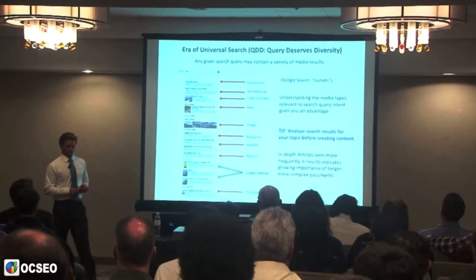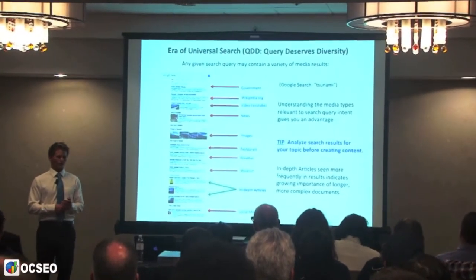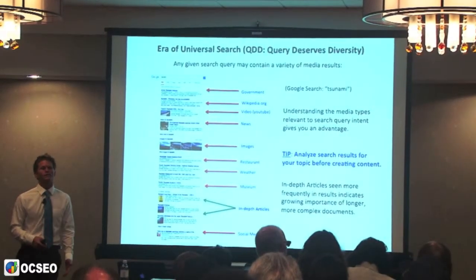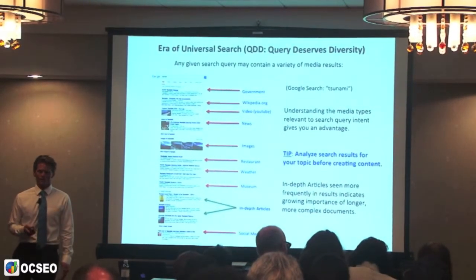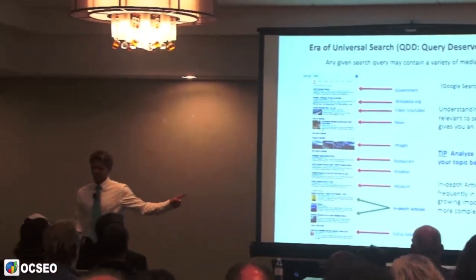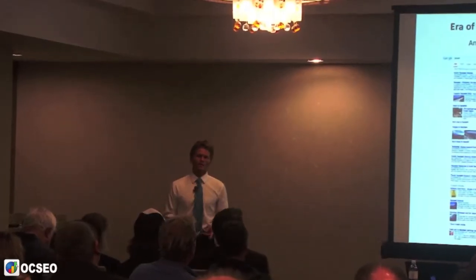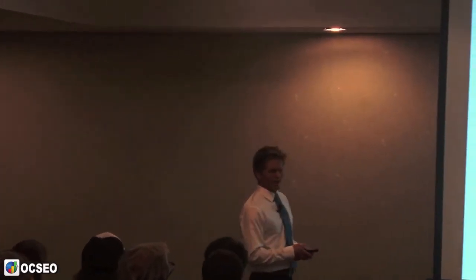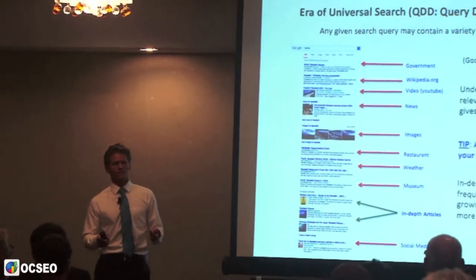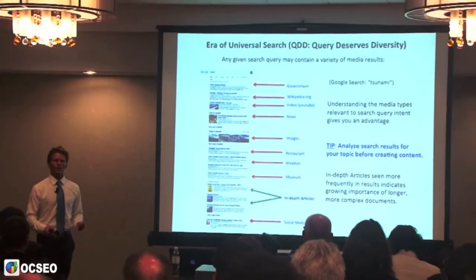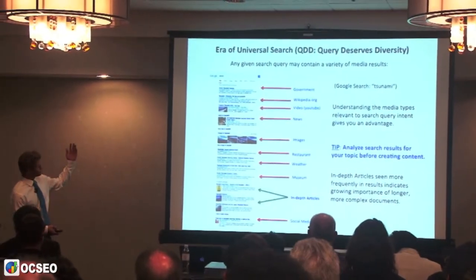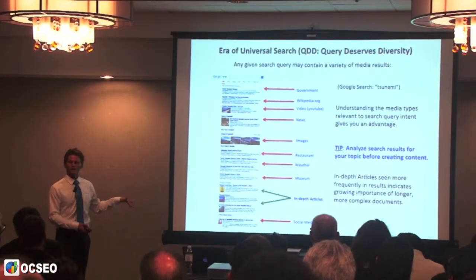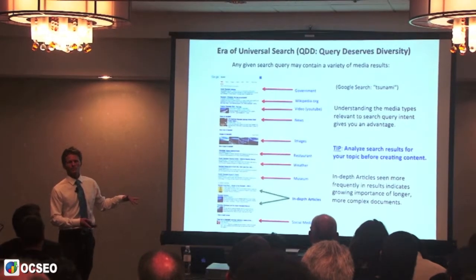Universal search basically means that the algorithm is searching for dozens of different types of media for any given search query. If you were to search for tsunami, for example, you're going to see a government listing, a Wikipedia result, a YouTube video, images, news, a social media listing, a restaurant, a weather station, and in-depth articles. Almost everything on that page is a completely different type of media.